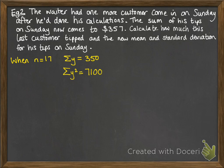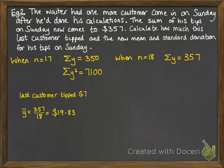When we had 17 customers, the total came to $350. The total of y squared was $7,100. Now when we add in the 18th person, we get the total of $357, which means that the last customer added 7 to the total, so he must have tipped $7. Then we can work out the new mean, $357 divided by 18.